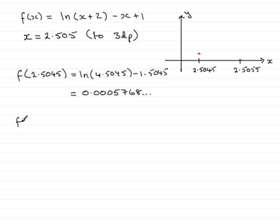Next, we need to do f of this value here. So, we'll do f of 2.5055 and again put it into the equation. So, we'd have natural log of the x value add 2, so that is 4.5055, and then we have minus x plus 1. If you work that out, you get minus 1.5055.